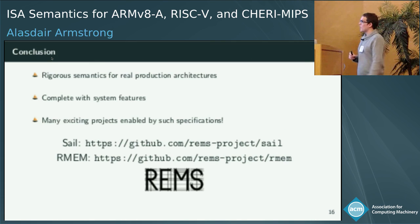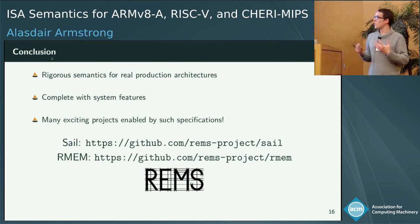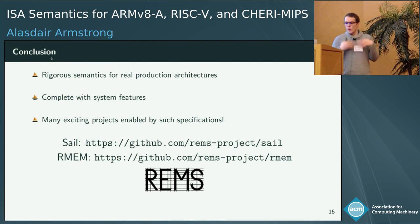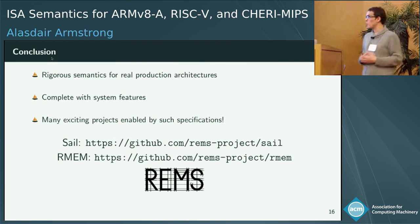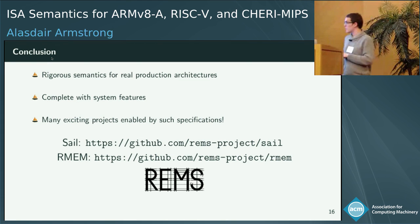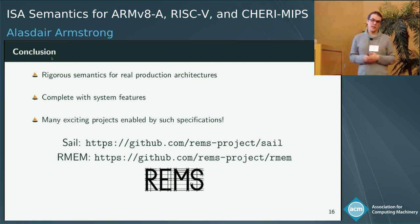To conclude, we've developed rigorous semantics for real production architectures, complete with system features, and I think there are many exciting verification projects of interest to the POPL community that are enabled by having such specifications available. All our specifications are available under permissive BSD licenses on GitHub. The concurrency work I briefly talked about is also open source and on GitHub, so feel free to go check it out.